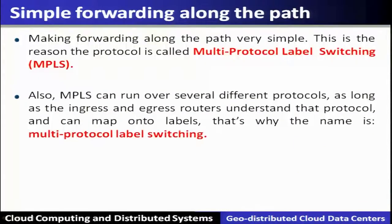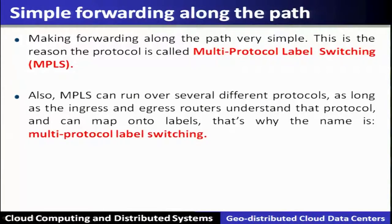Once tunnels are established, routing becomes simple and efficient, and MPLS also supports virtual private networks. MPLS can run over several different protocols as long as ingress and egress routers understand that protocol and map it onto labels — that is why it is called Multi-Protocol Label Switching.